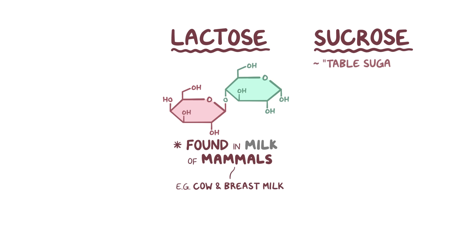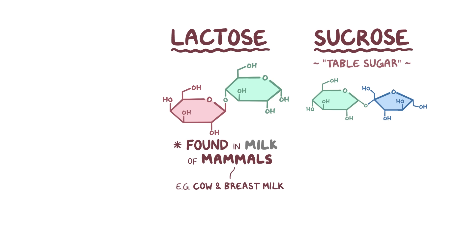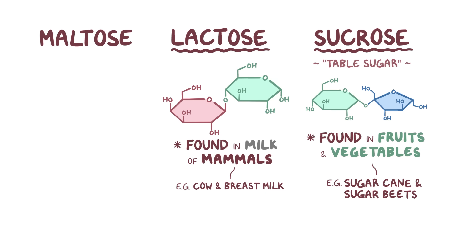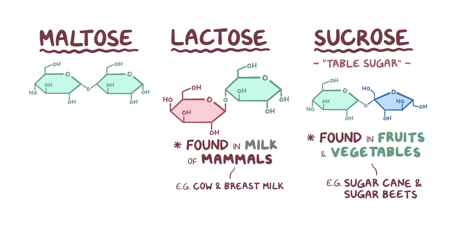Sucrose or table sugar is another disaccharide, and it's formed when fructose links up with glucose. Sucrose is found in various fruits and vegetables, with sugarcane and sugar beets having the highest quantities. Maltose is another disaccharide — two glucose molecules linked together — and it's found in molasses, which can be used as a substrate to ferment beer.